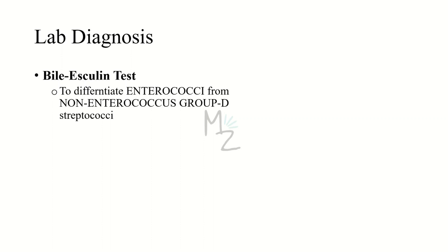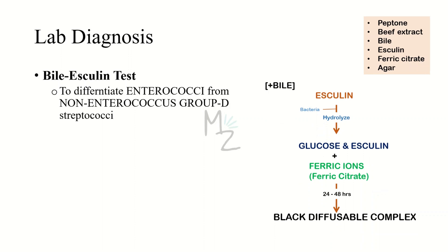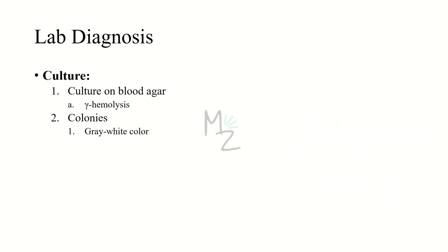The bile esculin test is done to differentiate enterococci from non-enterococci group D strep. Materials include peptone, beef extract, bile, esculin, ferric citrate, and agar. In the presence of bile, bacteria hydrolyze esculin into glucose and esculetin. These, along with ferric ions from the ferric citrate, form a black diffusible complex within 24 to 48 hours on a petri dish or test tube, indicating whether the bacterium is enterococci or non-enterococci. Culture on blood agar reveals gamma hemolysis — no hemolysis — and colonies are gray or white in color.